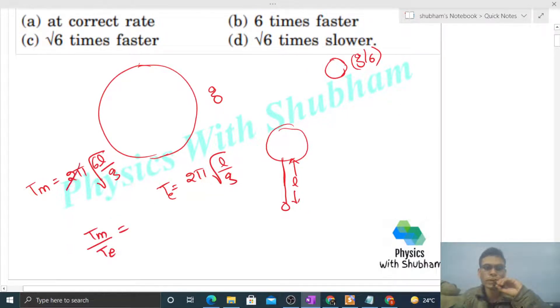That is 2π cancel ho jayega, l by g b constant ho jayega. So it will be under root of 6. So time period at Moon is under root 6 times time period at Earth.